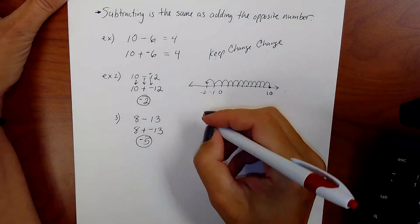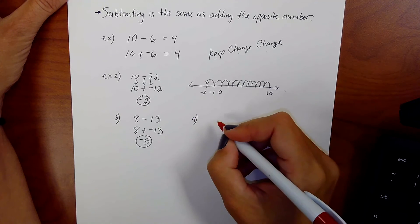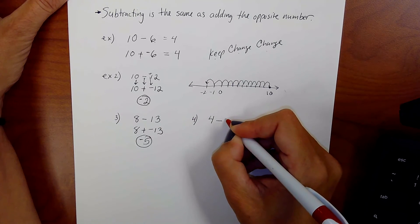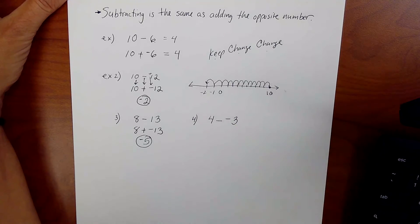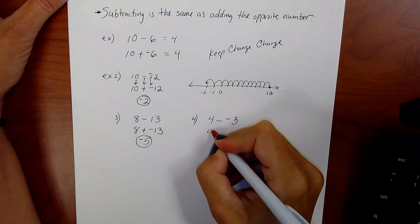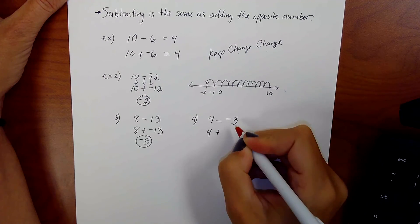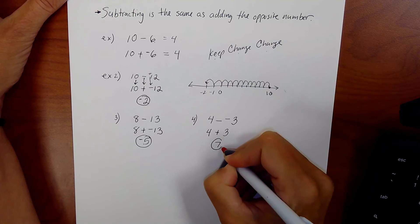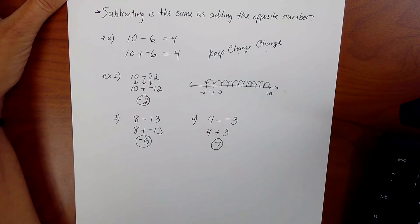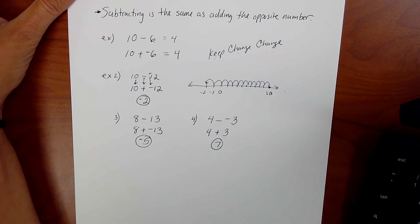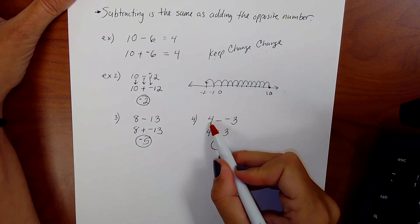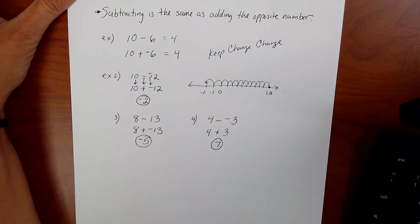How about if this second number is negative? Let's try 4 minus negative 3. Well, if you keep the 4, change this to addition, change this to a 3, you actually get 7. Interesting. 4 take away a negative 3 is the same as 4 adding 3. Because it's like you're going in the opposite direction of the negative, so you go positive. Yeah, makes sense.